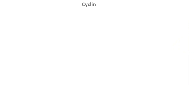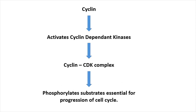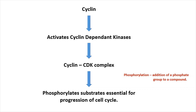Now let's get a general idea of how cyclins and their kinases work in the cell cycle. First, cyclins activate their relevant cyclin-dependent kinase, also known as CDK, forming a cyclin-CDK complex. This complex then phosphorylates substrates needed for the progression of the cell cycle. Phosphorylation means the addition of a phosphate group to a compound, by which they can either activate or inactivate compounds in the cell.